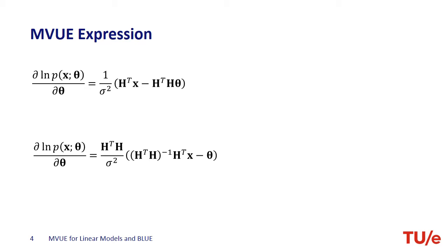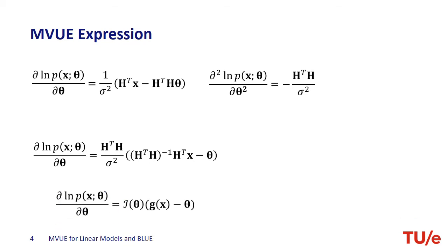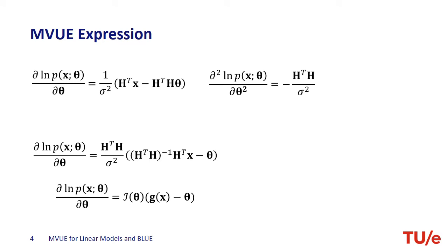We take the derivative of the first derivative of the log likelihood function with respect to theta. The Fisher information matrix is minus one times the expected value of this expression, which is a deterministic number in this problem setting. The expected value of a deterministic number is the number itself. There is a way to isolate the Fisher information from the first derivative of the log likelihood function. Let's take the H-transpose H expression from in front of theta — to do that we need to multiply H-transpose x with the inverse of H-transpose H, and we get the maximum likelihood estimator.